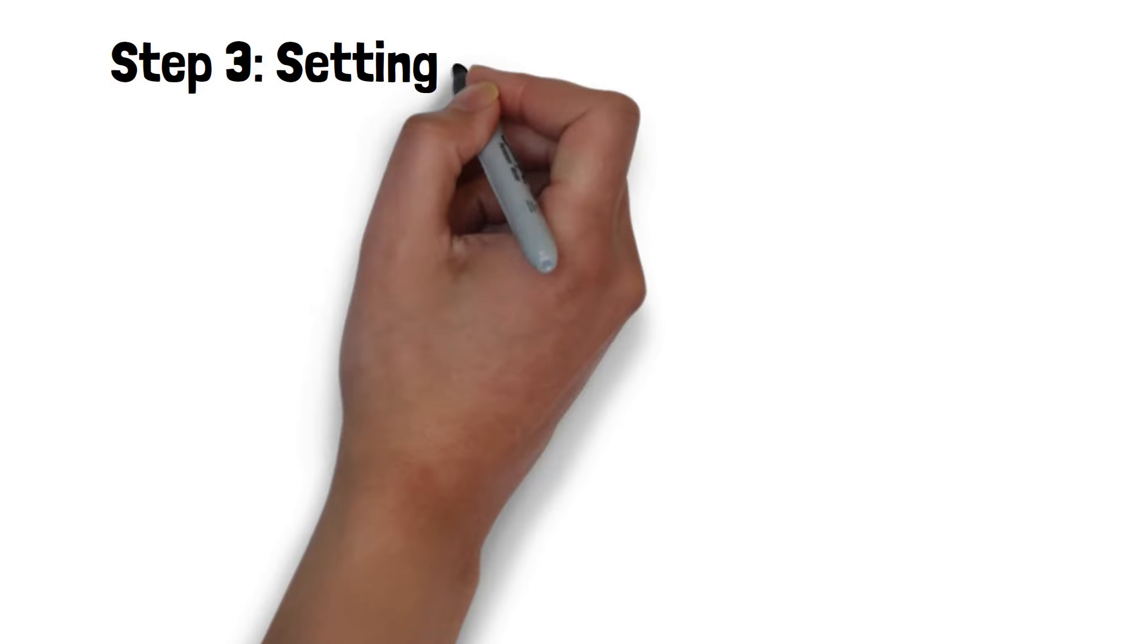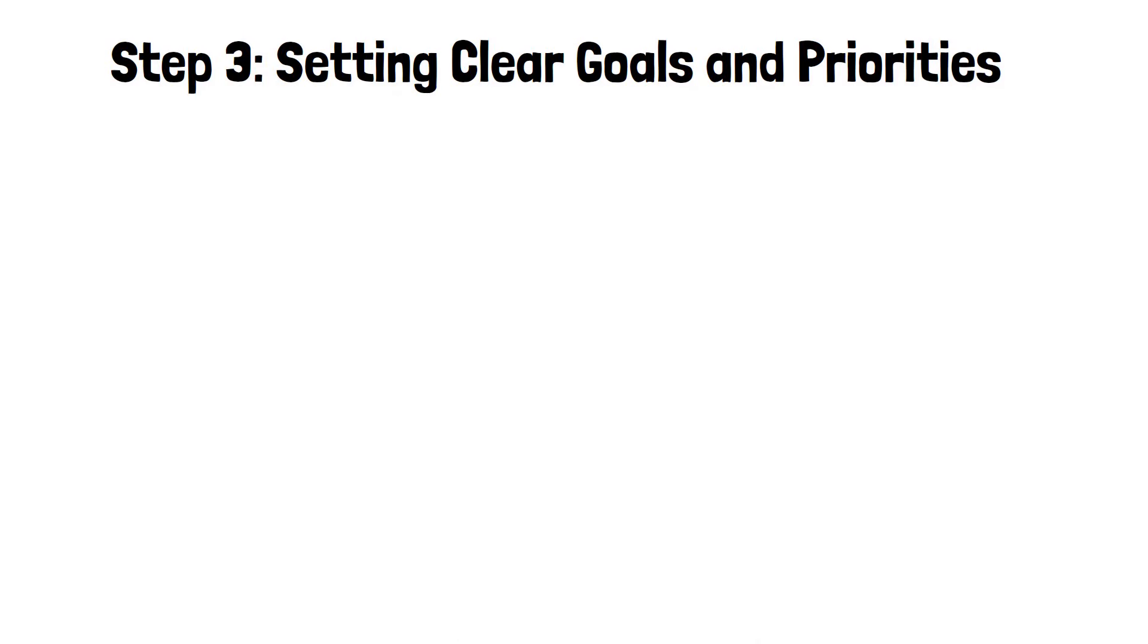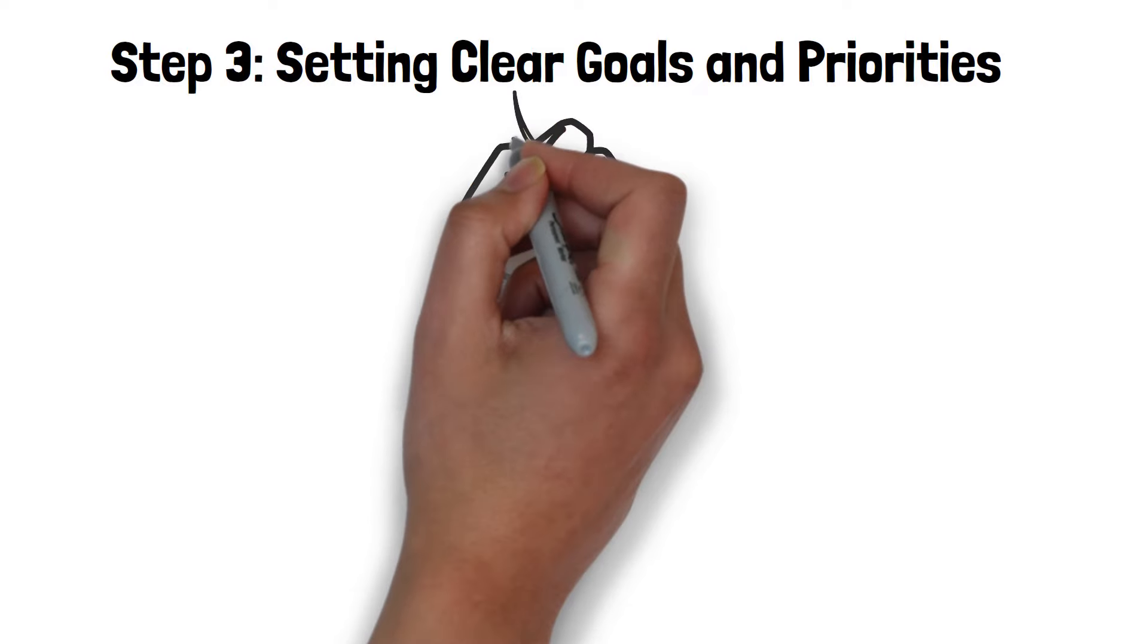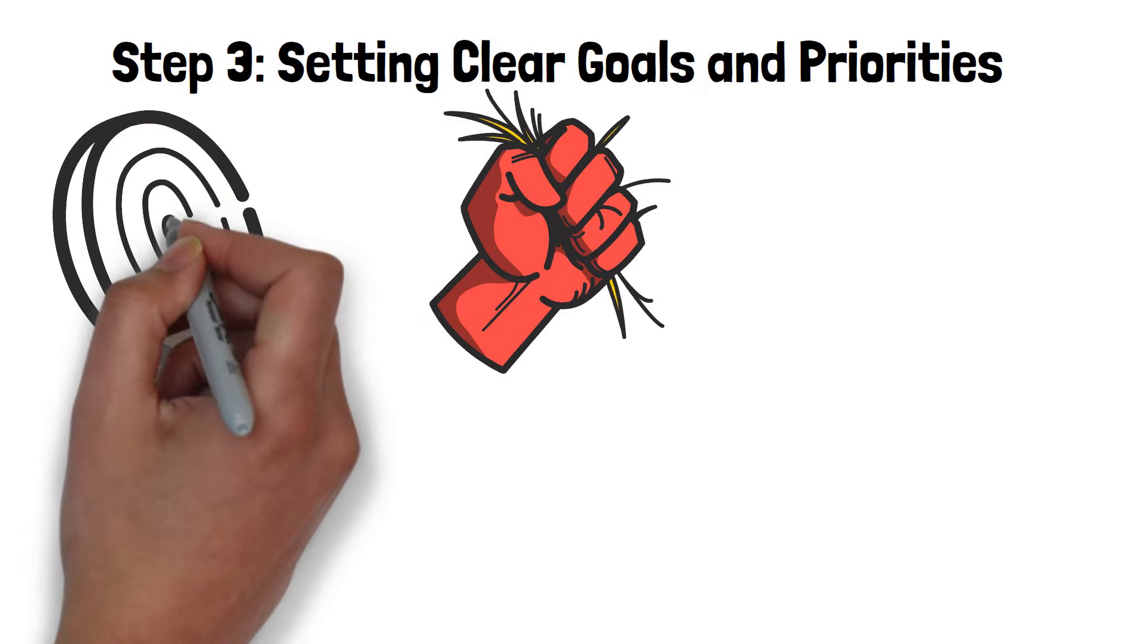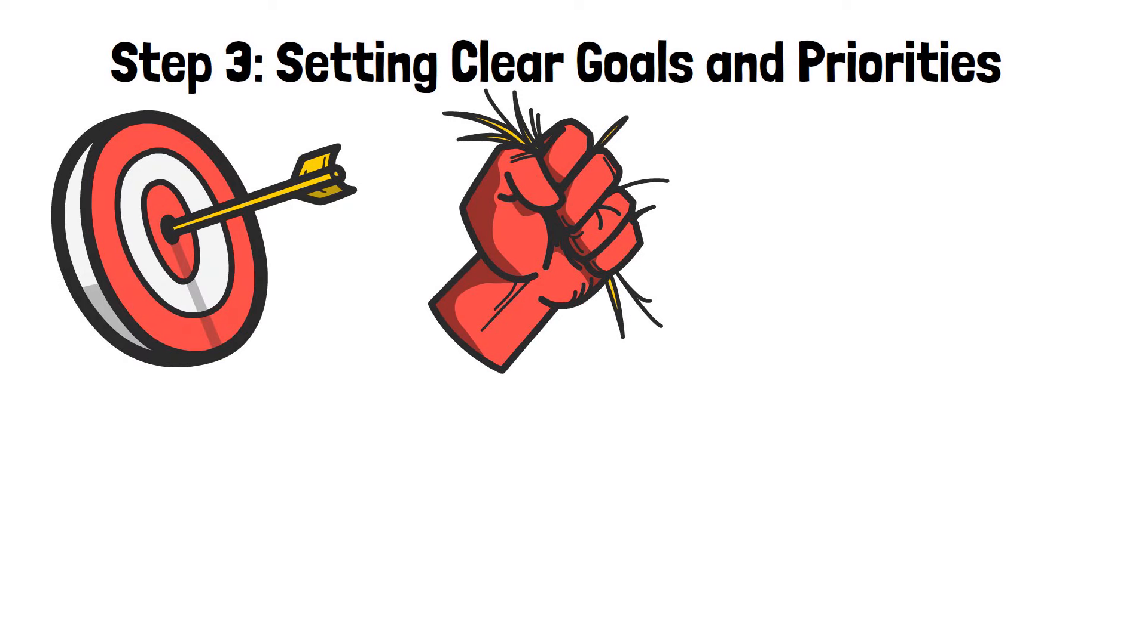Step 3. Setting clear goals and priorities. Setting goals provides us with direction and purpose, helping us stay focused and motivated even when faced with distractions. One effective framework for goal setting is the SMART criteria.